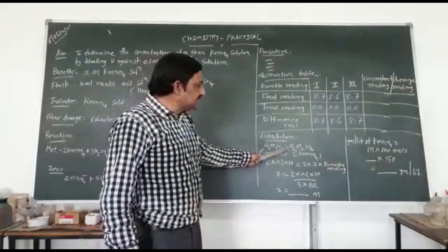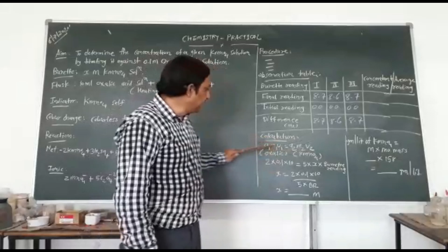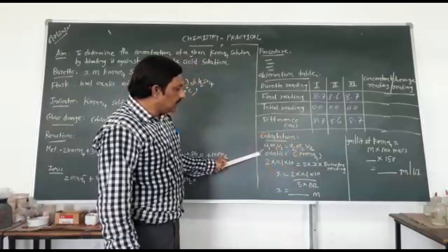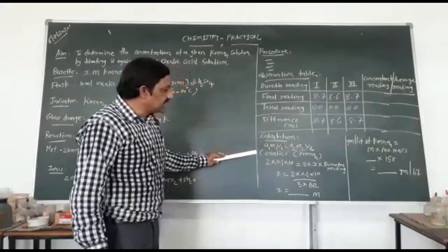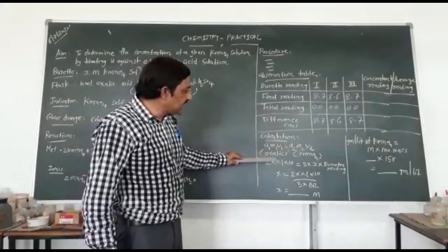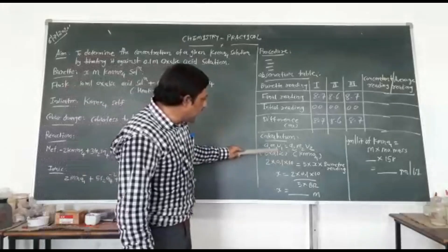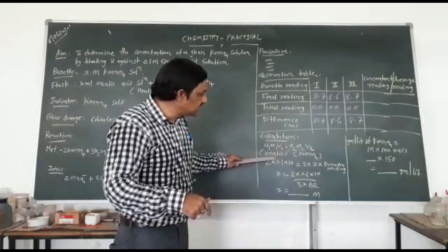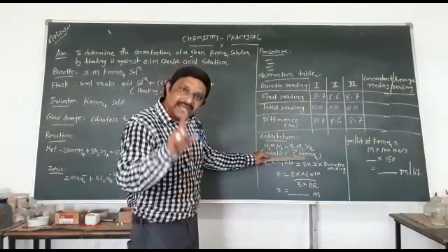For calculation, the main formula is A1M1V1 = A2M2V2, where A1M1V1 is for oxalic acid and A2M2V2 is for KMnO4. The n-factor (A1) for oxalic acid is 2, the molarity (M1) is 0.1, and the volume (V1) is 10 ml.